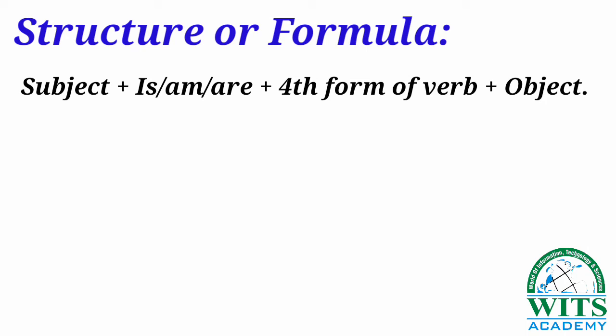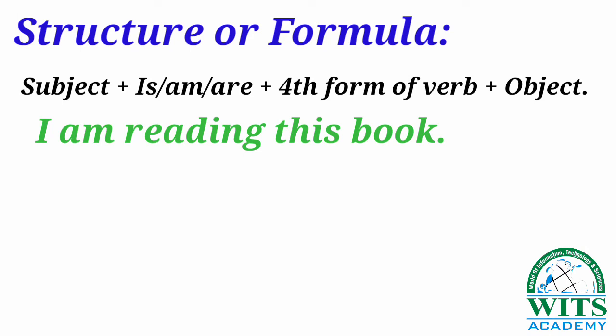Now let's make a sentence. Here is the sentence: 'I am reading this book.' As I told you, 'I' is the subject and we have used 'am' with this subject. 'Reading' is the -ing form of the verb, and after that we have used the object, which is 'this book.' So: I am reading this book. This is an affirmative sentence.